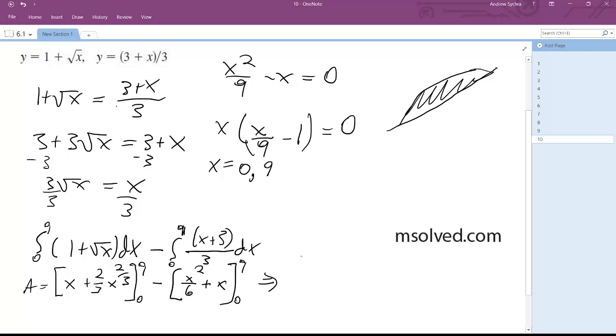So moving this over I get 9 plus 2 thirds times 9 raised to the 2 thirds minus 9 squared over 6 or 81 over 6 plus 9. And the area's going to be equal to 27.